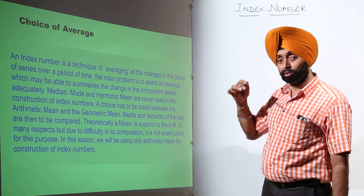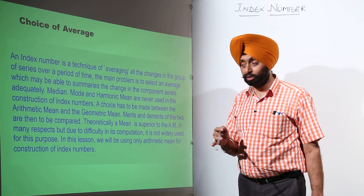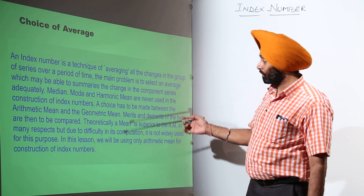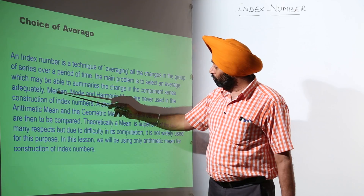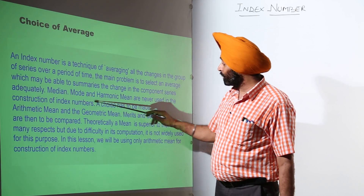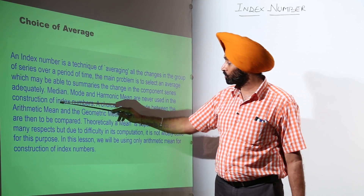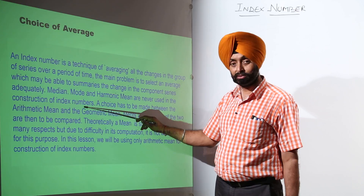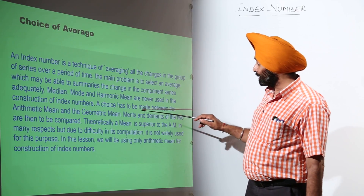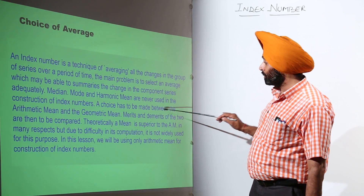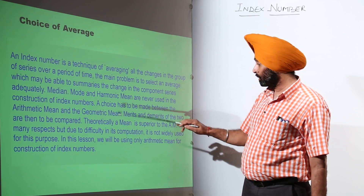Basically, what we are going to choose here is the arithmetic mean. Median, mode, and harmonic mean are never used in the construction of index numbers. A choice has to be made between the arithmetic mean and the geometric mean.